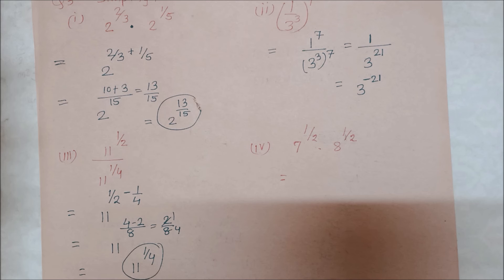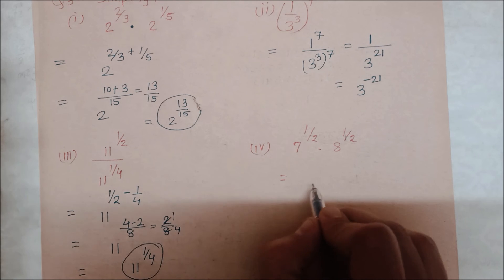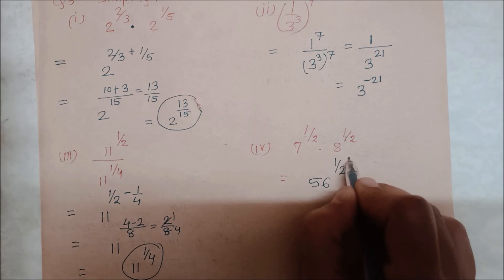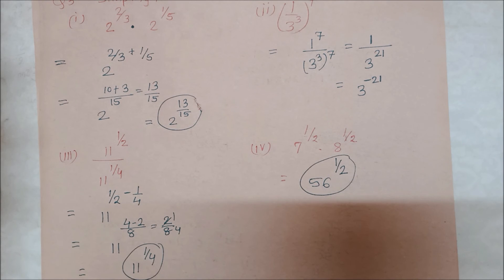So our bases will be multiplied and their power, which is common in both, will remain the same. So 7 times 8 is 56, raised to the power 1/2. So 56 raised to power 1/2 is our answer.